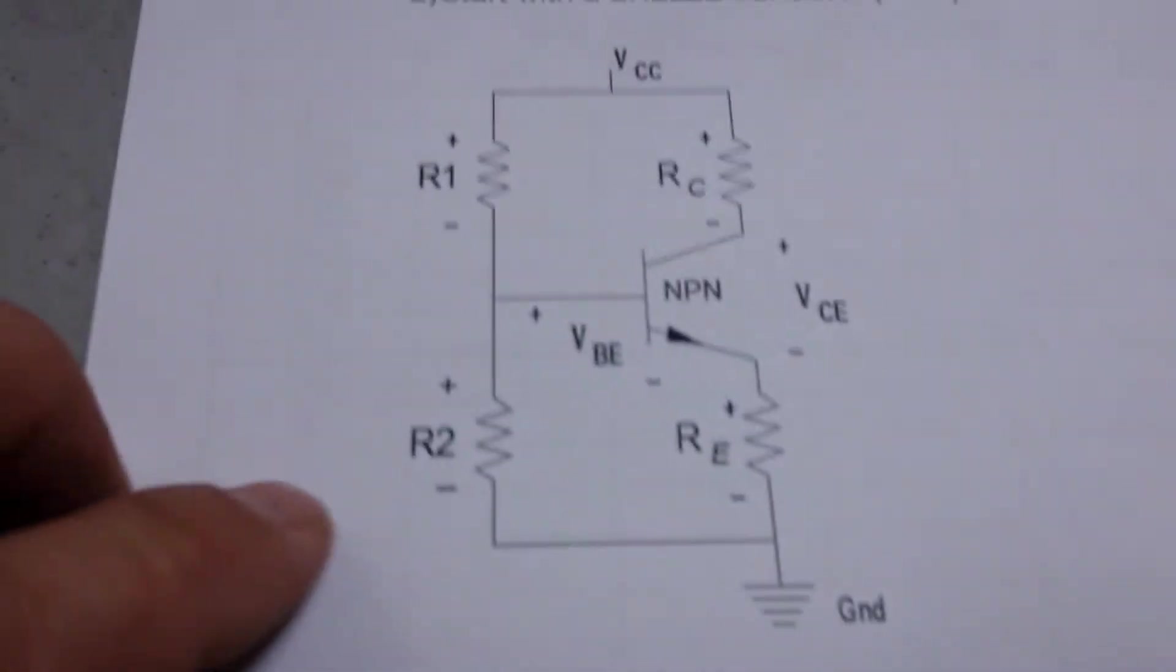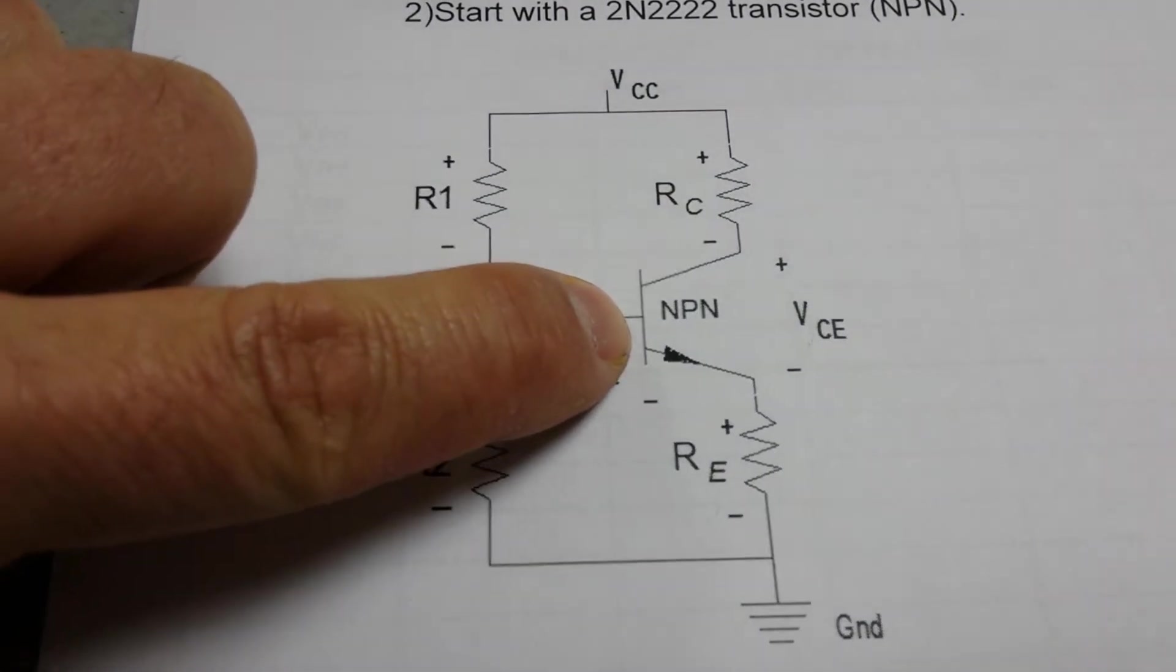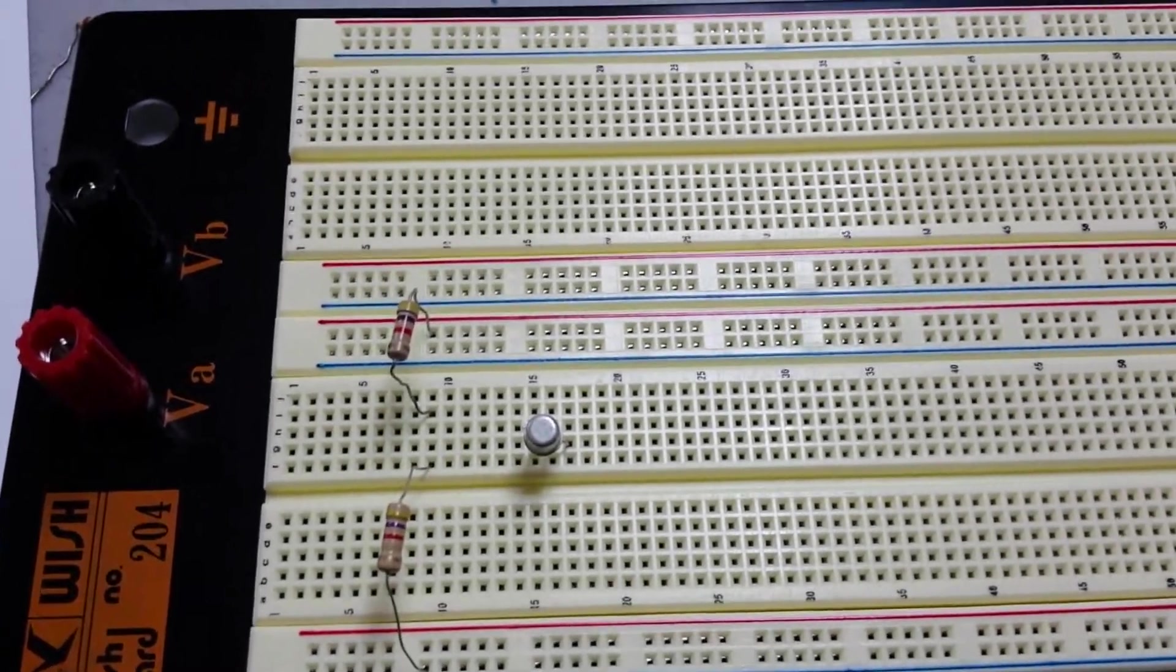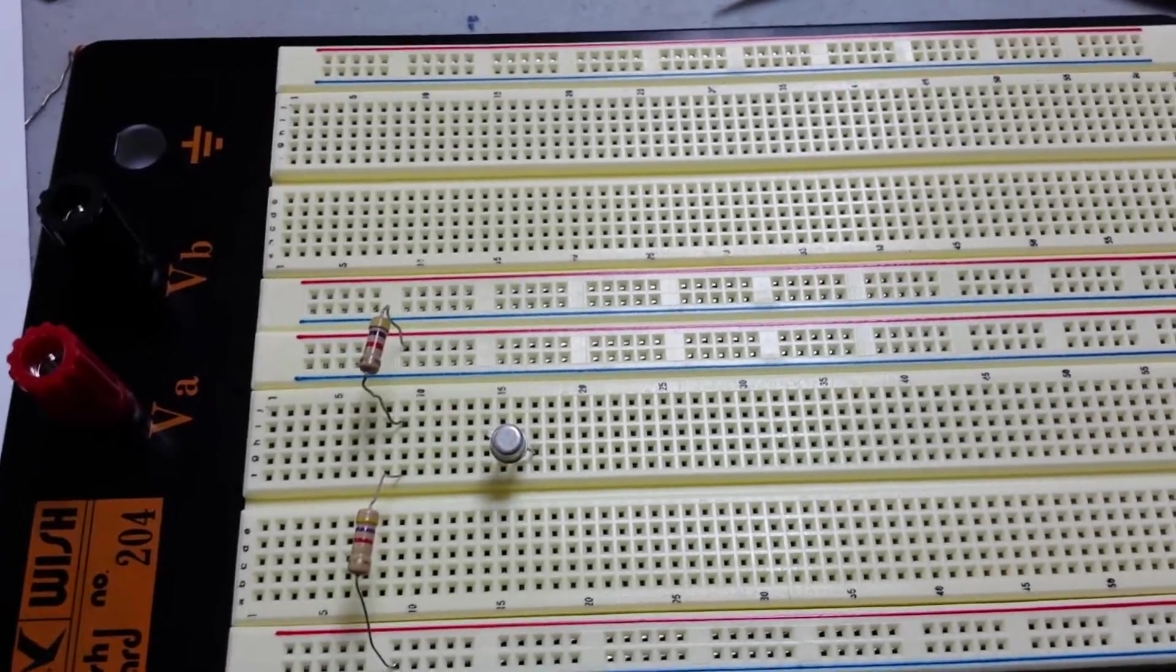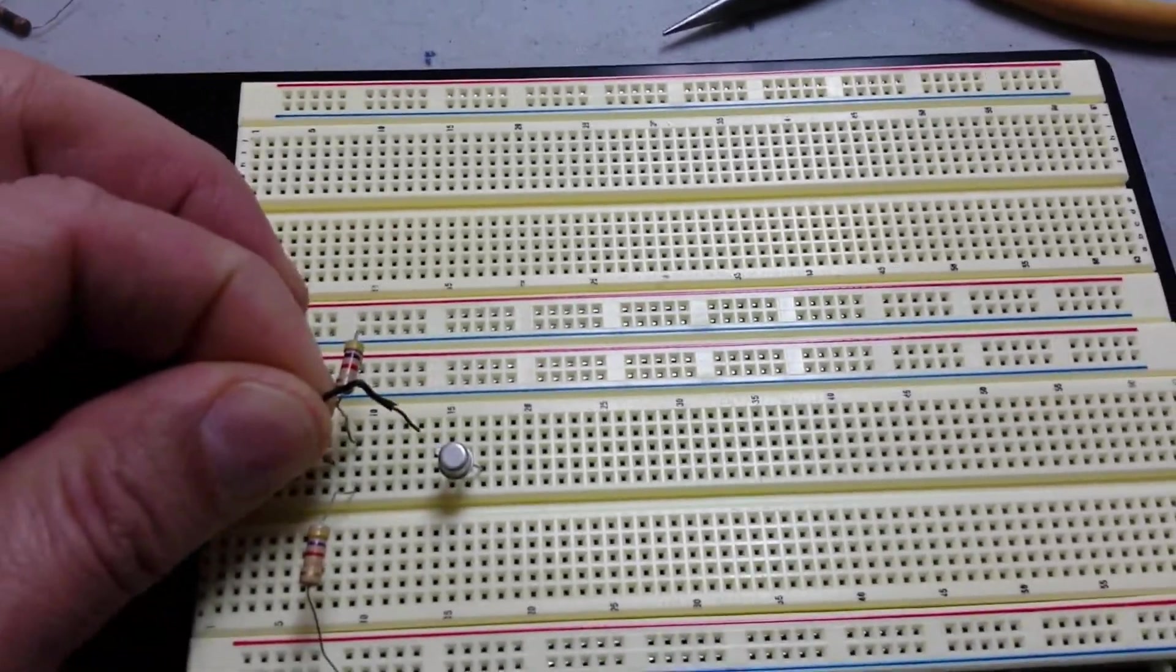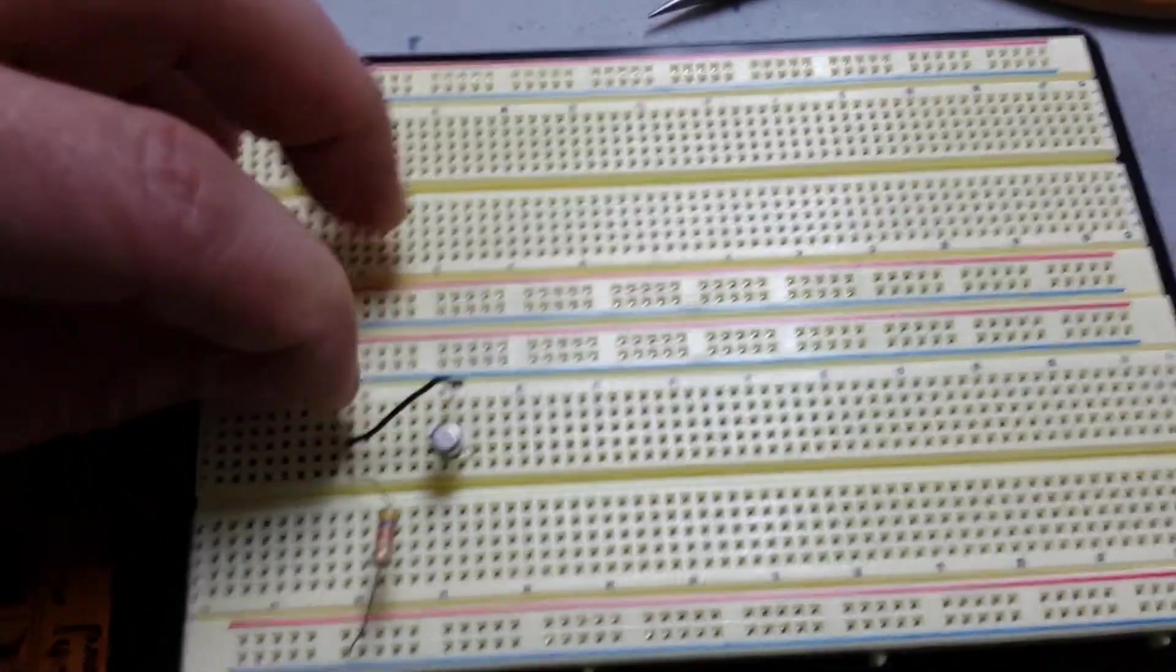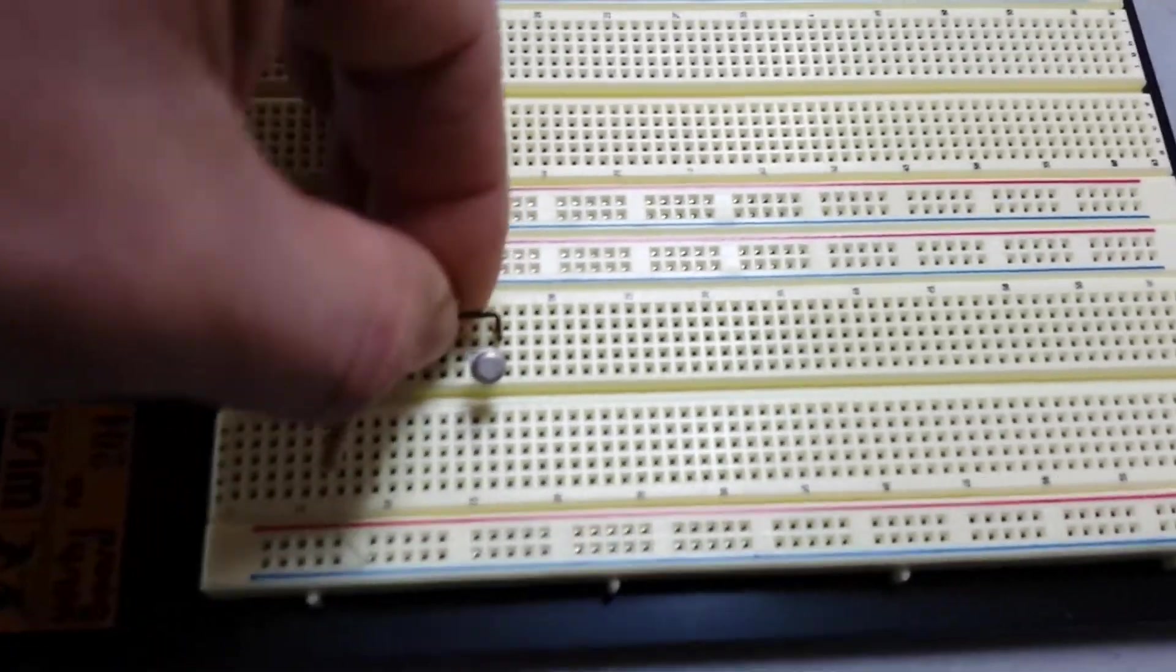So now what we need to add would be a wire from where these two meet to the base. So once again, for the purpose of the video and the fact that I'm holding up the camera in one hand and working with my left hand, it's not going to be neat. But what I want you to do is put that jumper in from that point right there where both resistors meet and the base of the transistor right there.